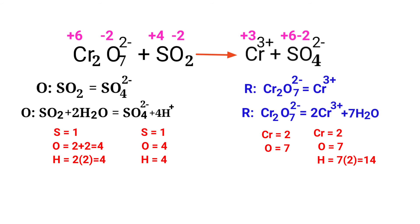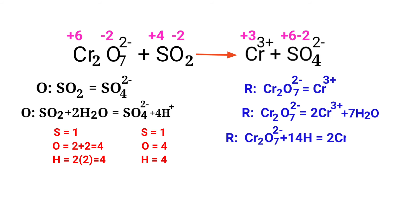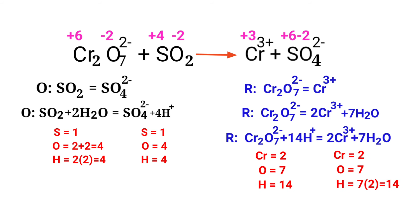Now we need to balance the hydrogen atoms in the reduction half-reaction. To do this, we can produce H⁺ ions. The number of atoms are now balanced in the reduction half-reaction.